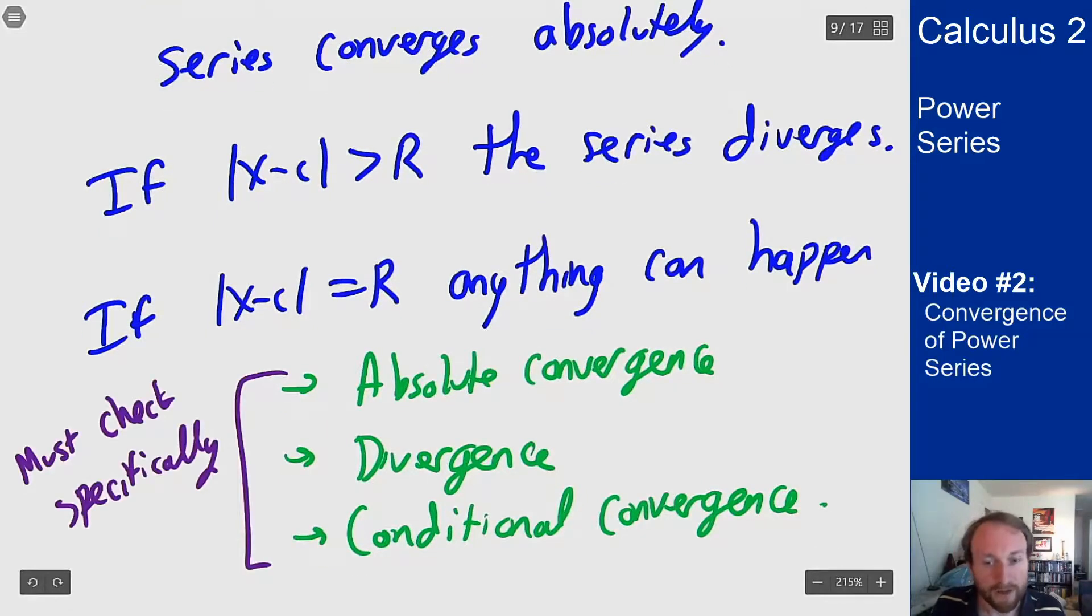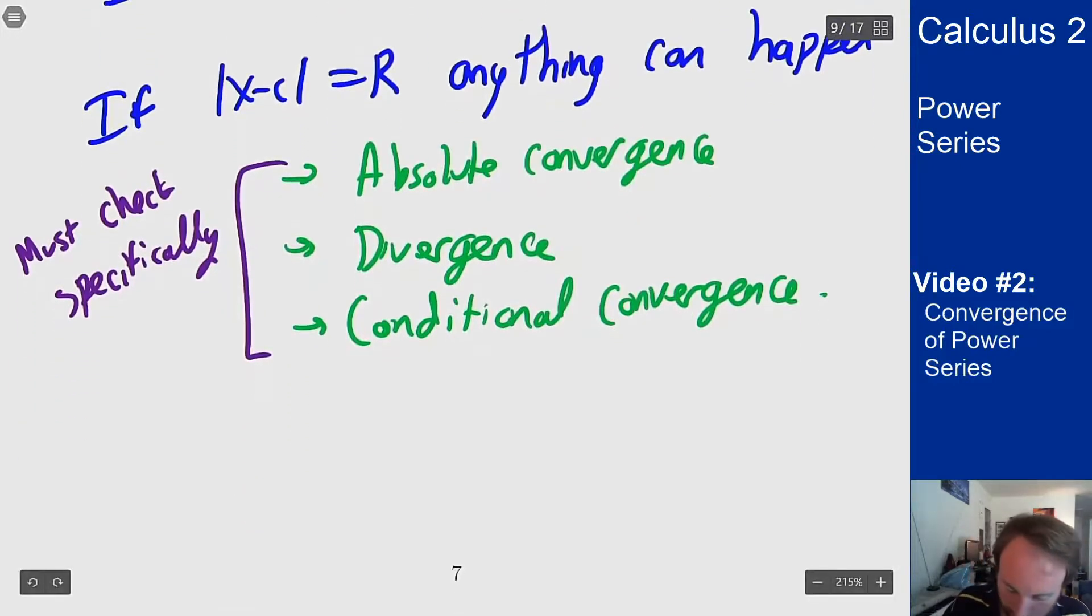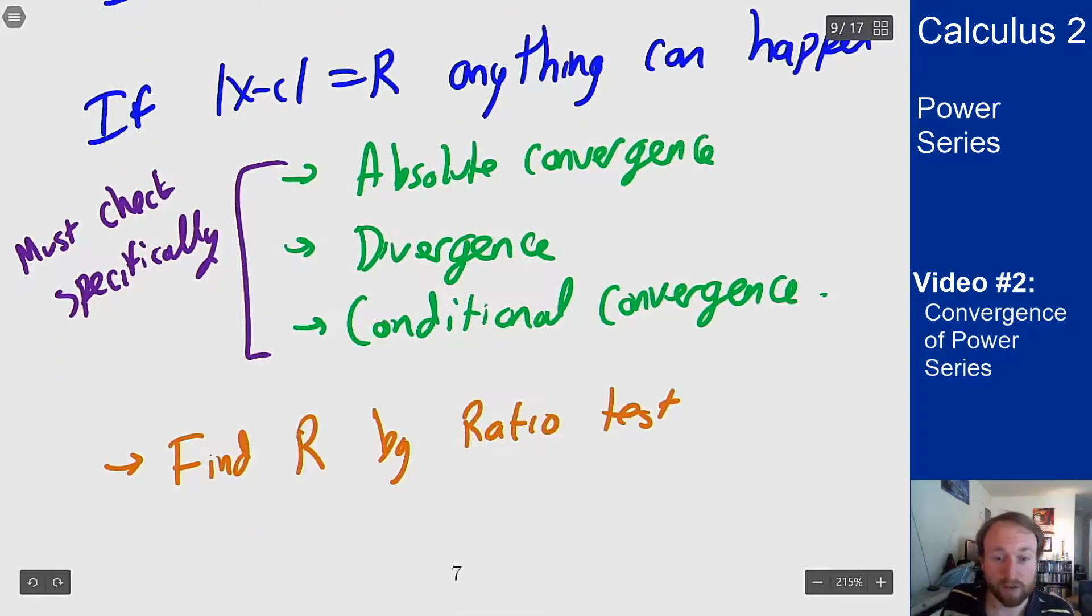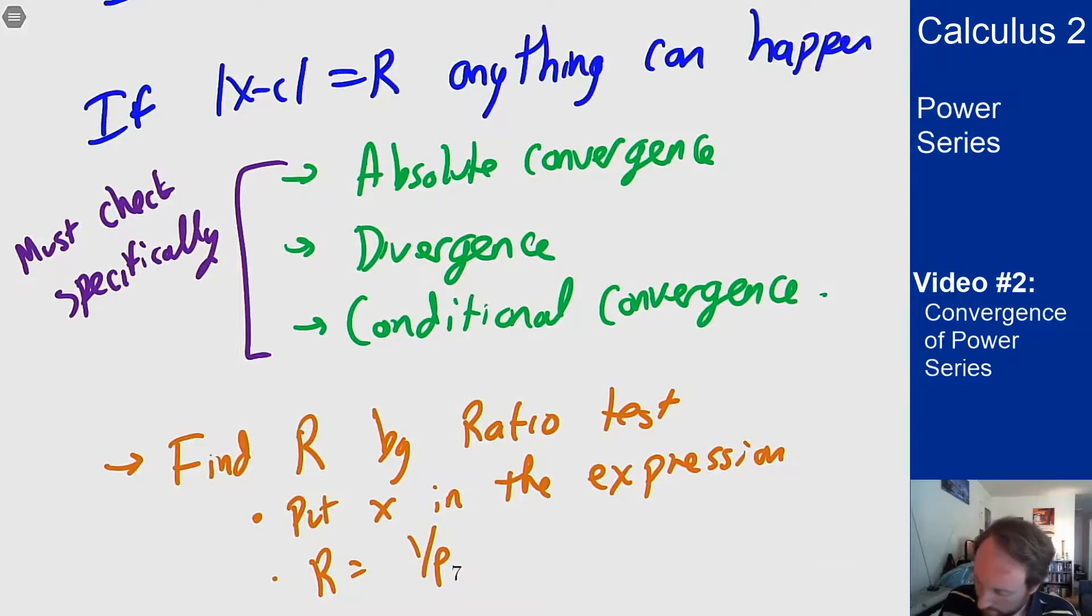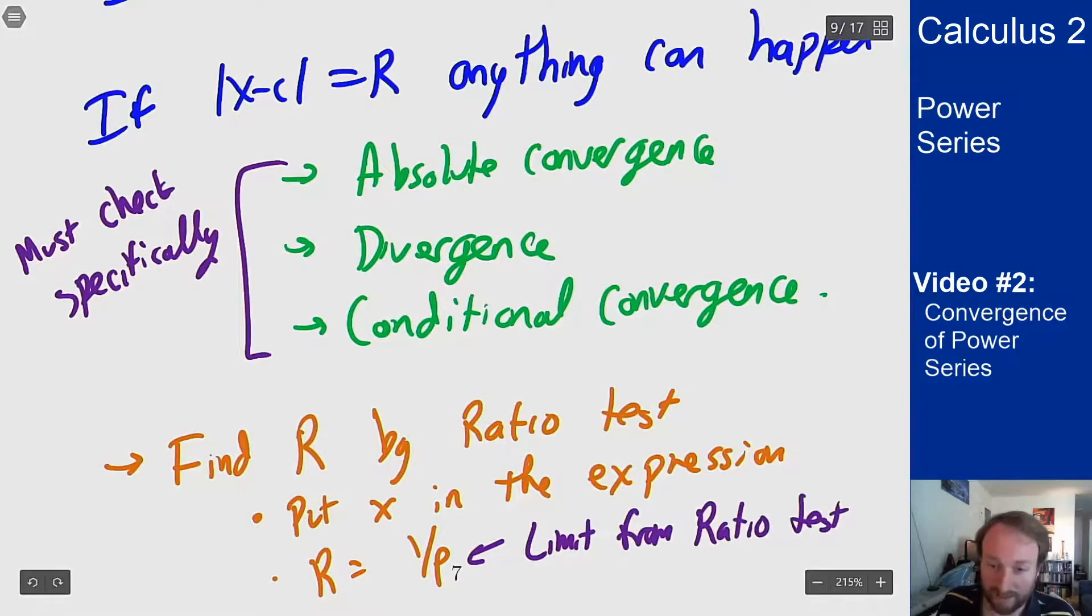And for all of these you're finding the r by the ratio test. Either you put x in your expression and solve it that way, or use the fact that r is 1 over rho where rho is the limit from the ratio test if you ignore the x to the n terms.